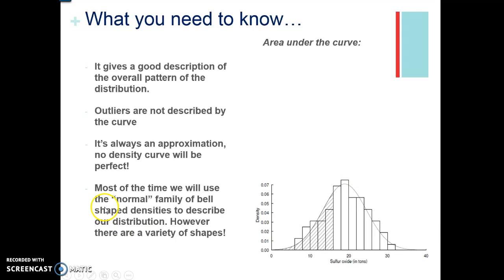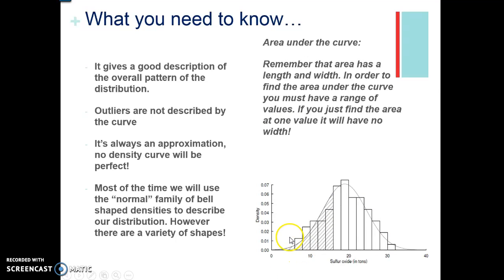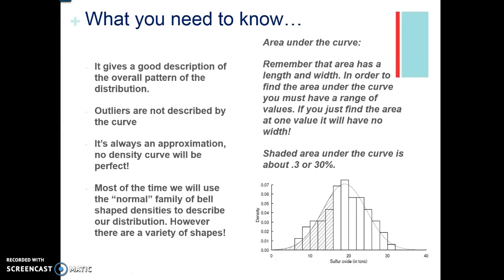Most of the time we're going to use the normal family of bell-shaped distributions to describe our distribution. However, there are a variety of shapes, so it doesn't always have to look like a beautiful bell curve. The area under the curve always has a length and a width. In order to find the area — since this represents 100% of our data — you have to have a range of values. If you just find the area at one value, say at 10, it's not going to work because there's no width.